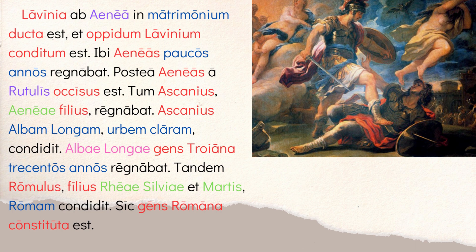I'd encourage you to look up more about Aeneas and what happens after. I'll also post a video about Romulus and Remus. The connection here: the Romulus and Remus story is an older one about where the city of Rome came from; the Aeneas story is about where the Roman people come from. Romulus and Remus are descendants of Aeneas and Ascanius. Their mother is the famous Rea Silvia, and the story of her and the god Mars — involving their grandfather Numitor trying to kill them — is a really famous one.